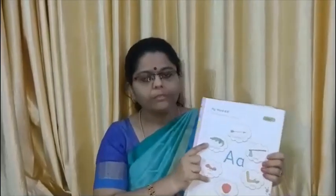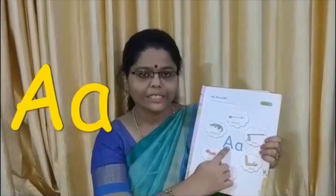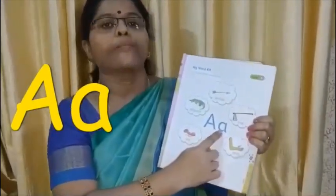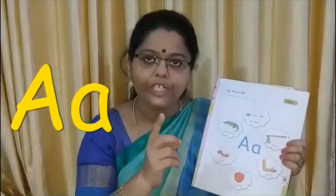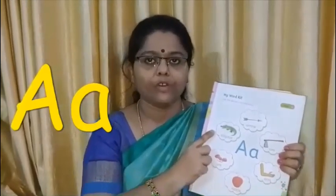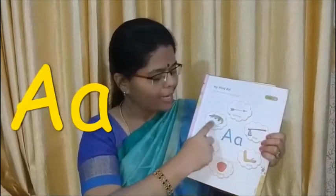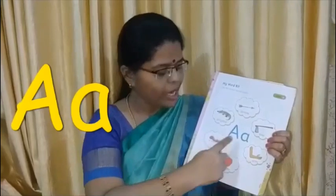Okay children, we will start now. You all know this letter, isn't it? This is A — capital A and small a. Now I will tell you the sound of A. Listen carefully children. The sound of A is 'a'. A — arrow. A — alligator. A — axe. A — ant. And A — apple. So the sound of A is 'a'.